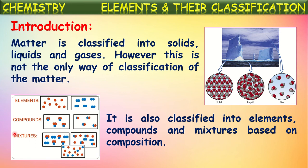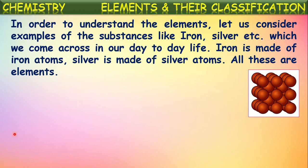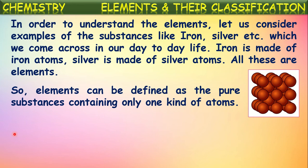To understand elements, let us consider examples like iron and silver, which we come across in day-to-day life. Iron is made up of iron atoms, and silver is made up of silver atoms — so all these are elements. An element is defined as the pure substance which contains only one kind of atoms. Iron is an element because there is only one kind of atom — iron atoms — found inside it.